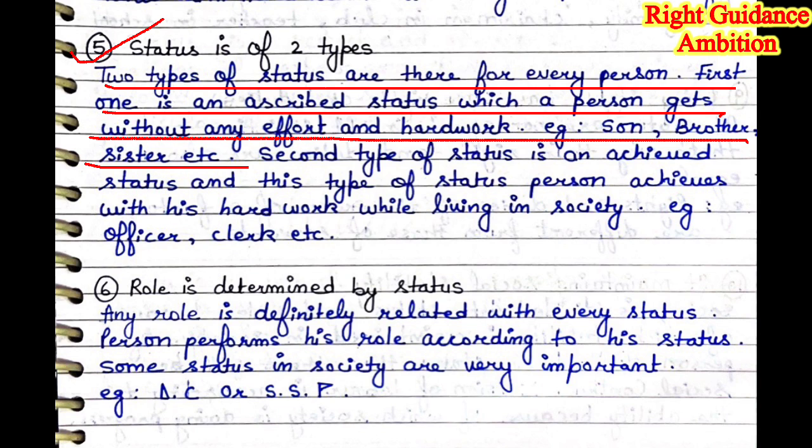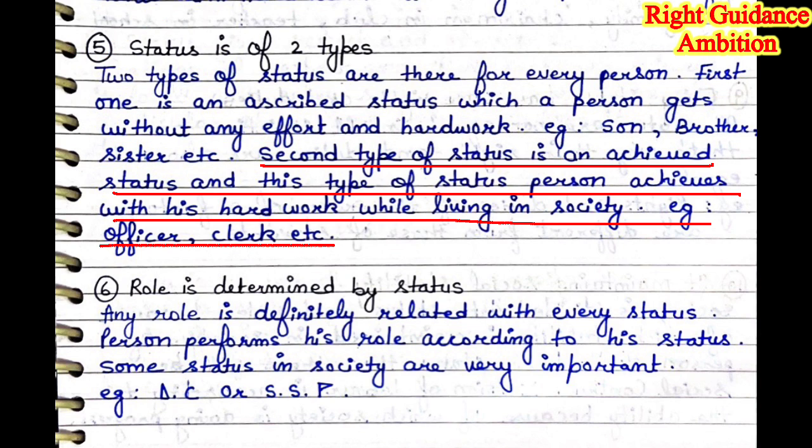Fifth point: status is of two types. First is ascribed status, which a person gets without any effort or hard work. Ascribed status is the one that comes to every person without any effort — like our relationships with family, relatives, and friends: son, brother, sister. These are all statuses we get without any effort. Second type of status is achieved status. This type of status a person achieves with hard work while living in society. Achieved status is what we try to achieve and then get. Like someone trying to become an officer, a clerk, or similar — whatever status is associated with that effort, it counts as achieved status.